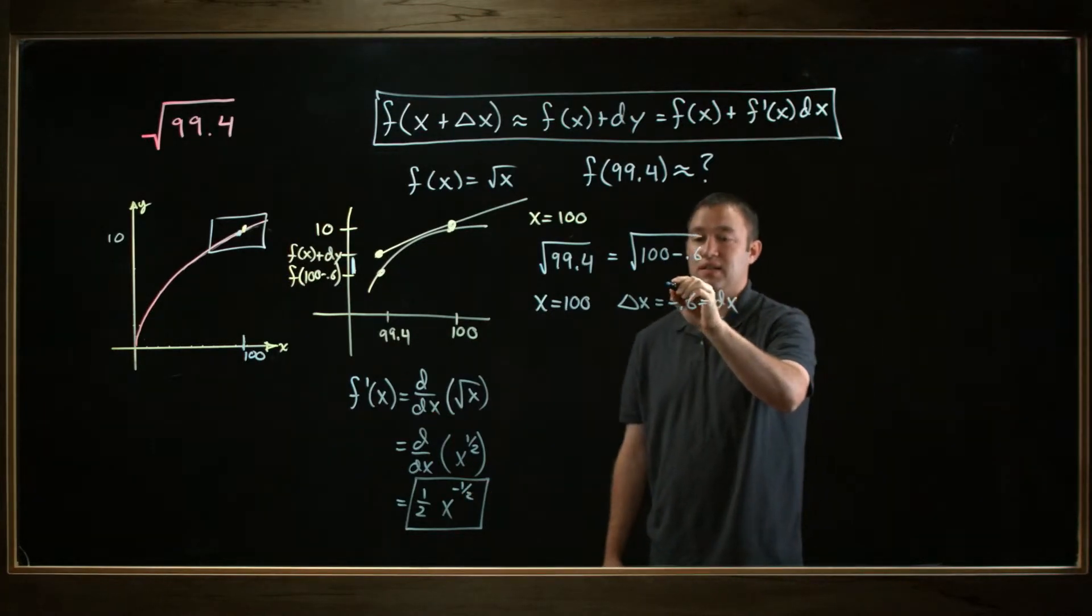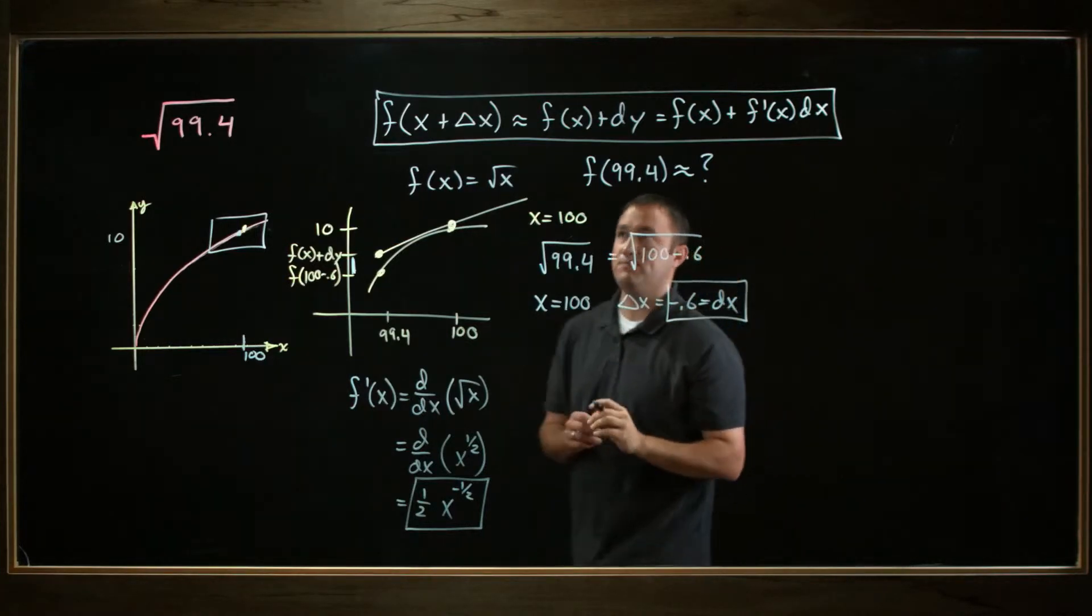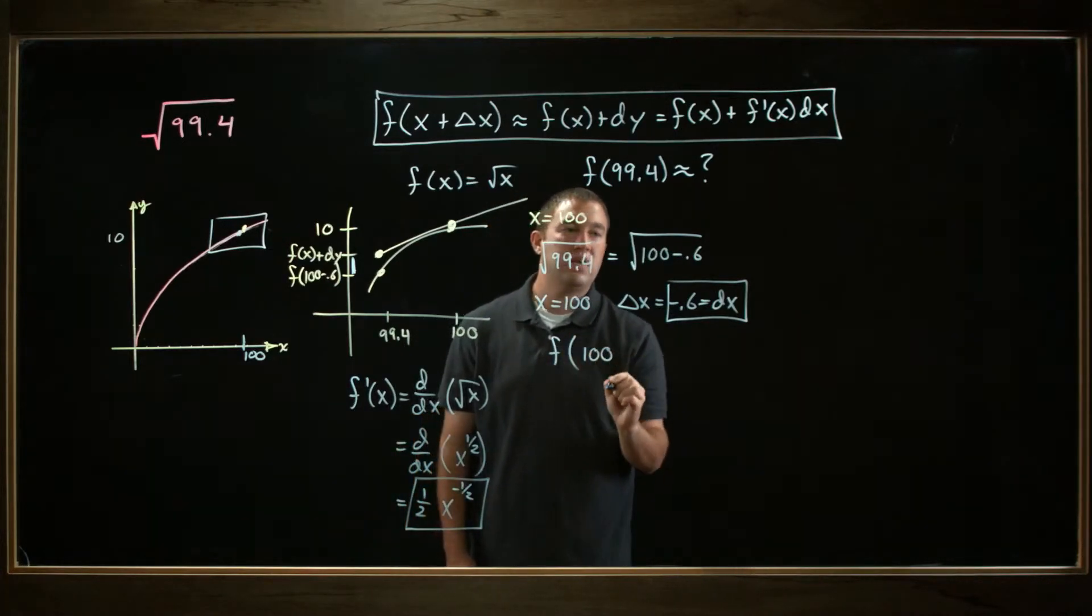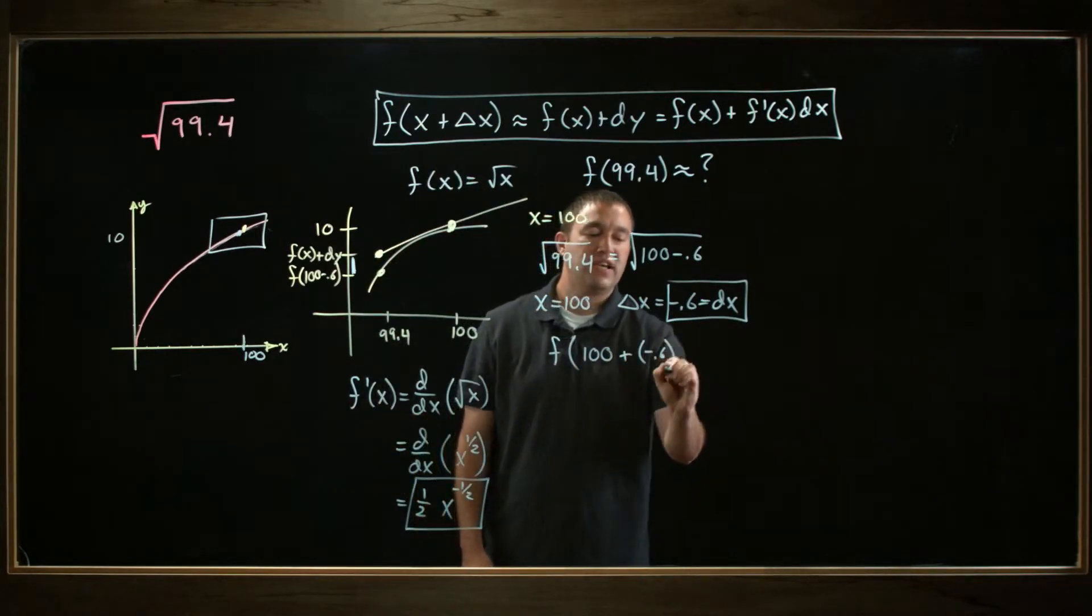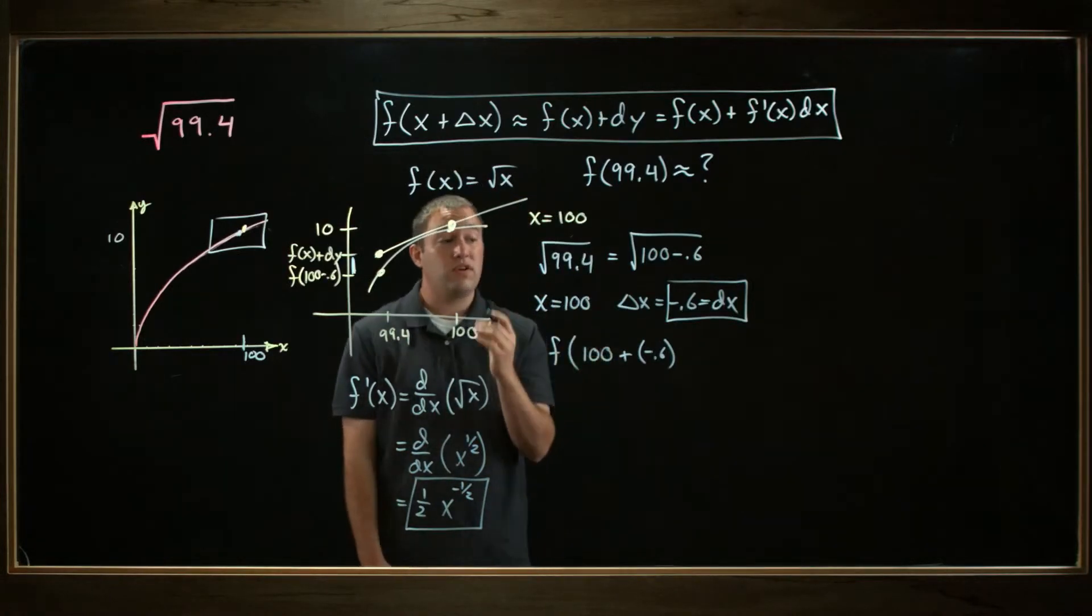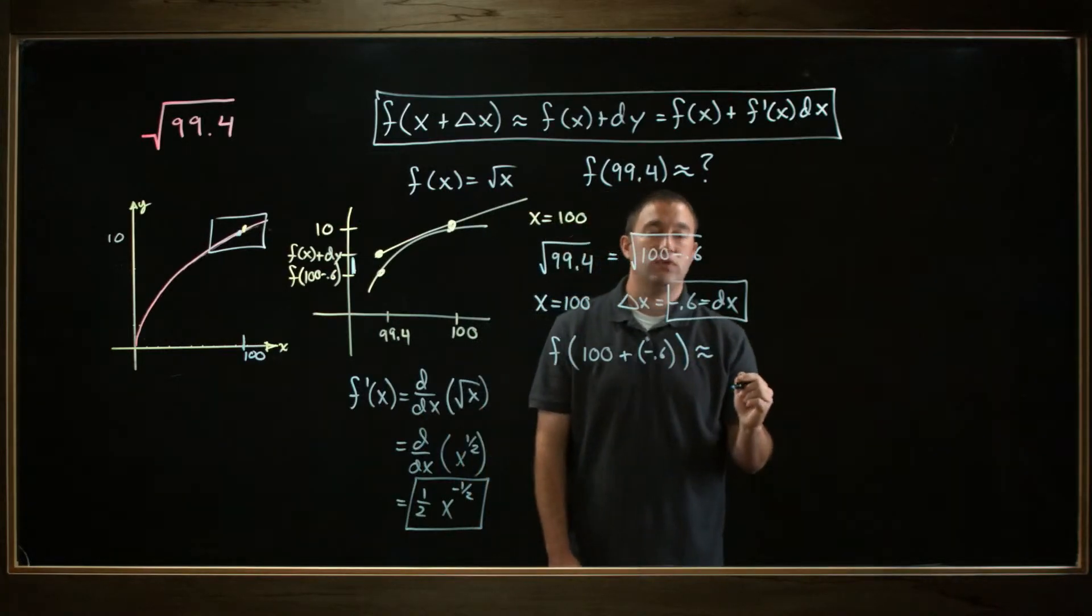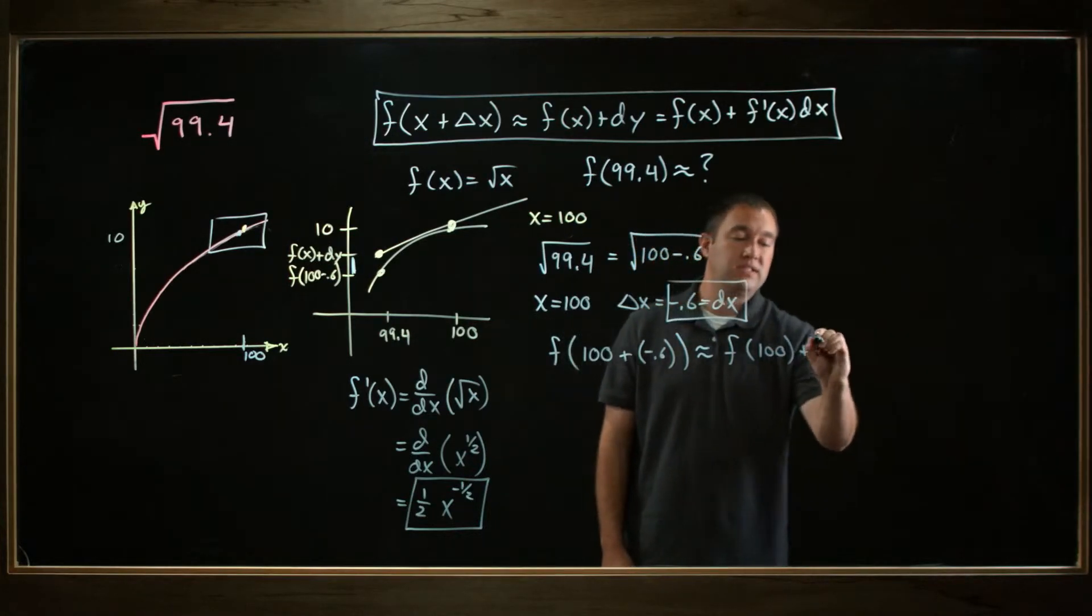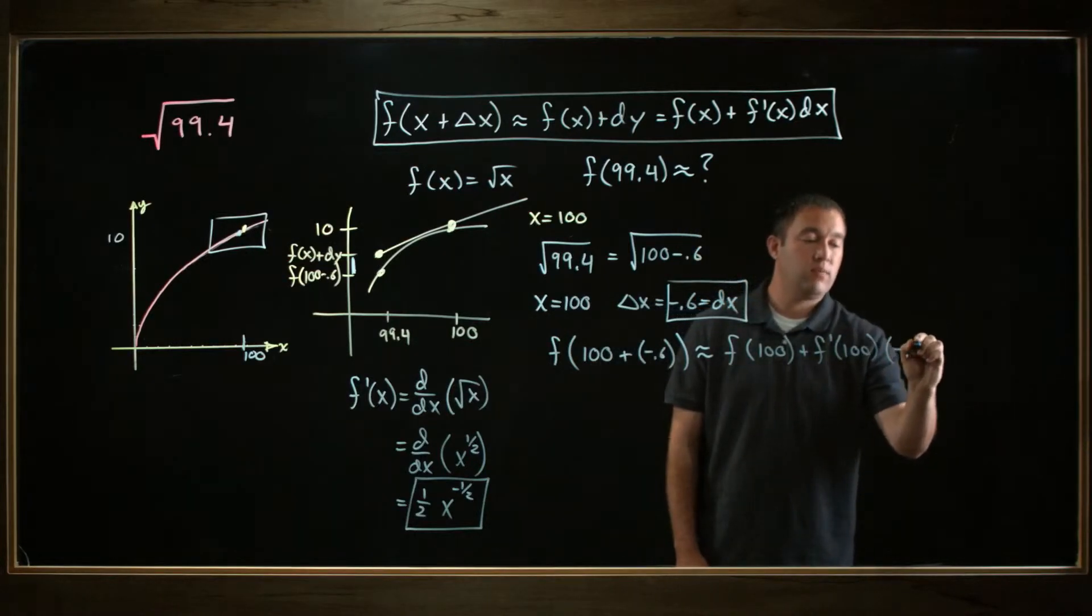Now I've got everything I need for my formula. I've got f of x—that's square root of x. I've got f prime of x—that's 1 half x to the negative 1 half. And I've got this dx, which is negative 0.6. So now let me go ahead and plug it into my formula. f of 100, well, just so I use this formula, I'll do plus negative 0.6. It's okay for your delta x to be positive or negative. In this case, I'm moving a little to the left of 100, so I'll plug it in like that, which is approximately equal to f of 100 plus f prime of 100 times negative 0.6.